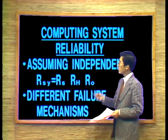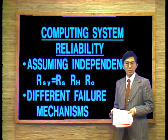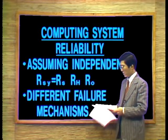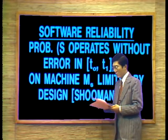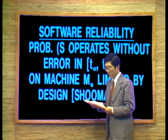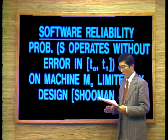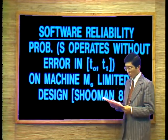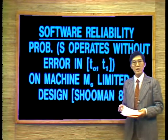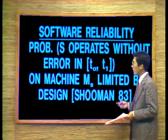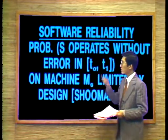With these three factors, each has different failure mechanisms. So how can we define software reliability? Software reliability is the probability that a given software system operates for some time period without software error on the machine for which it was designed, given that the software system is used within some kind of design limits. This definition was given by Schumann in 1983.